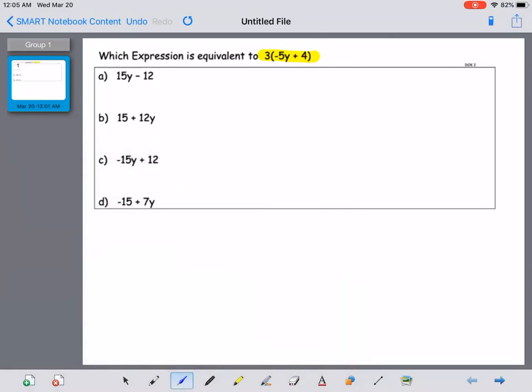So in order to simplify this expression, what we need to consider is the fact that this is multiplication. It's essentially 3 times this quantity of negative 5y plus 4.